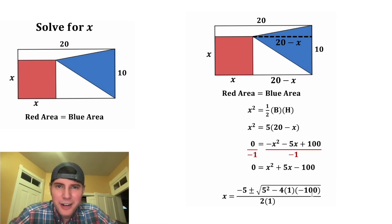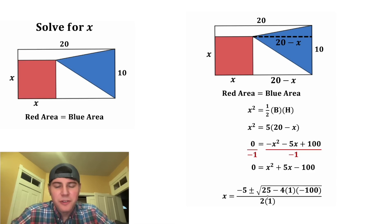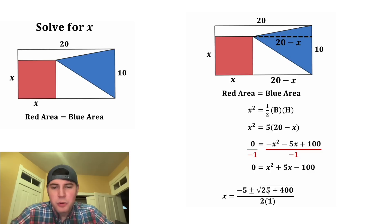Let's start by simplifying under the radical. 5 squared is equal to 25, and negative 4 times 1 times negative 100 is equal to positive 400. And then 25 plus 400 is equal to 425.